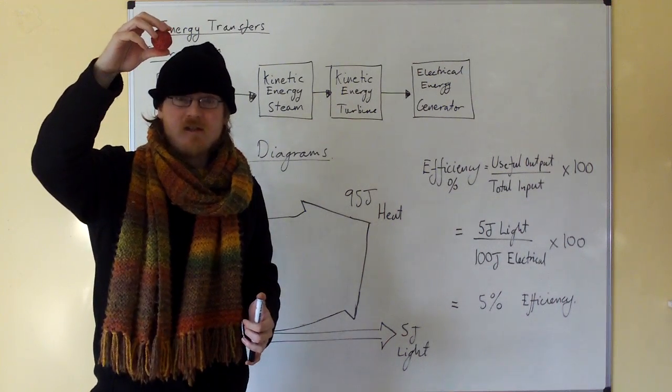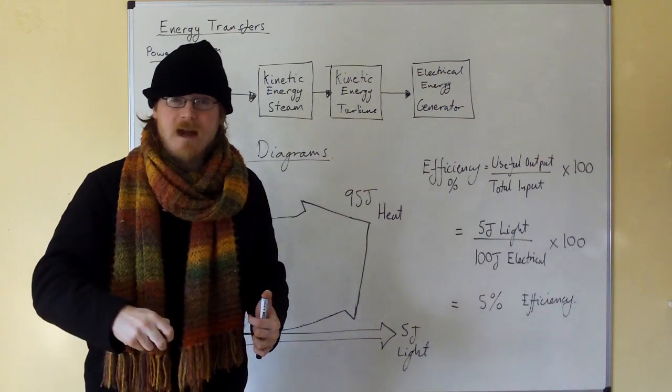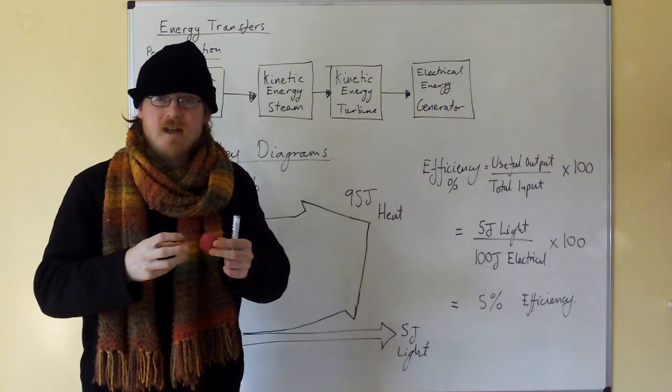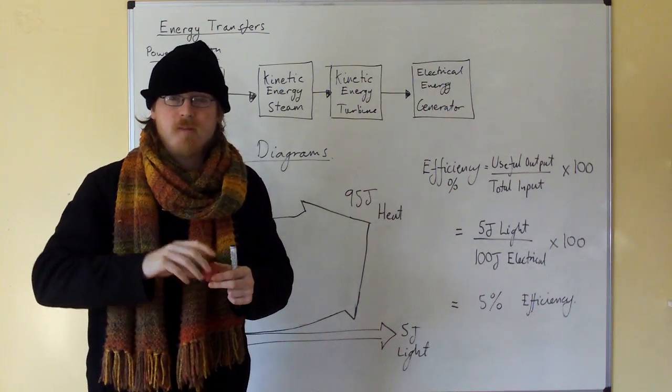Gravitational potential energy turns into kinetic energy as the ball is falling. When the ball hits the ground, some of that energy is lost as sound—it makes a sound—and most of the energy is turned into elastic strain energy as the ball is deformed at the bottom of its bounce.